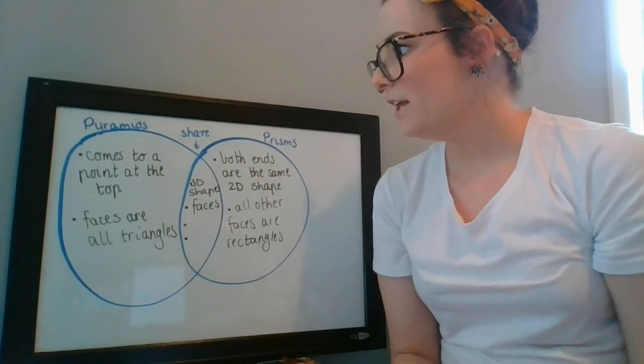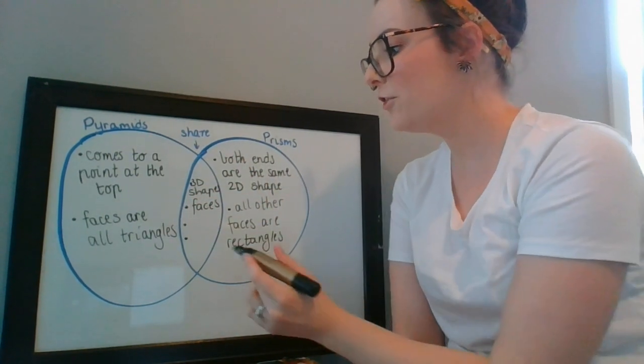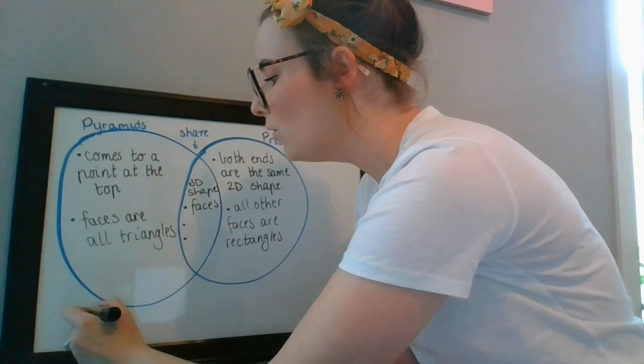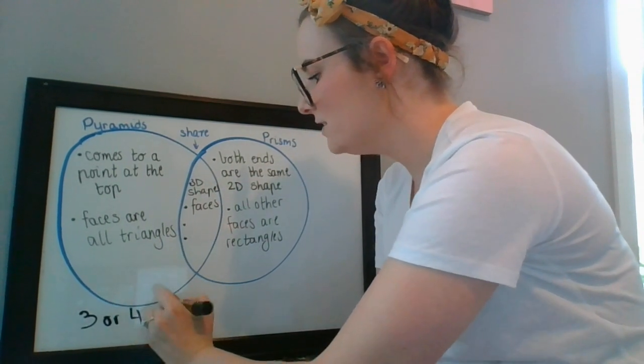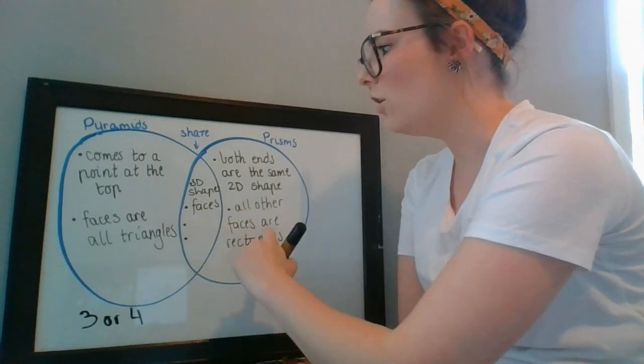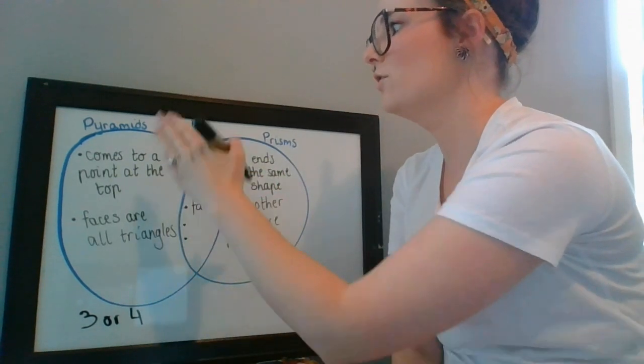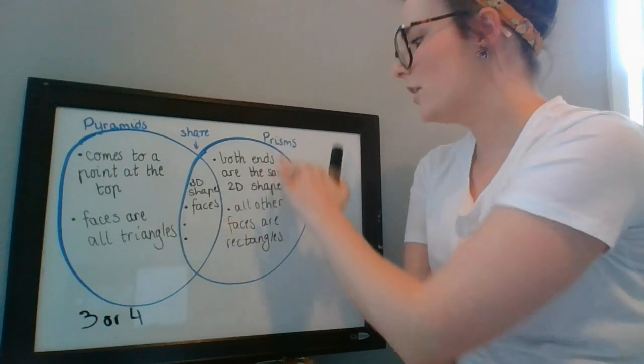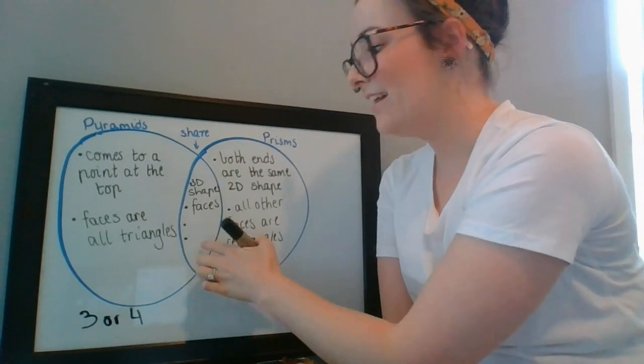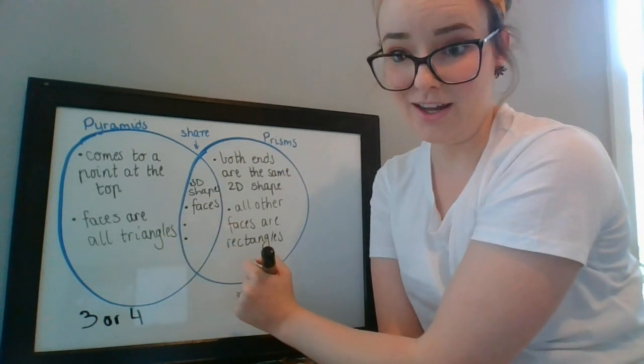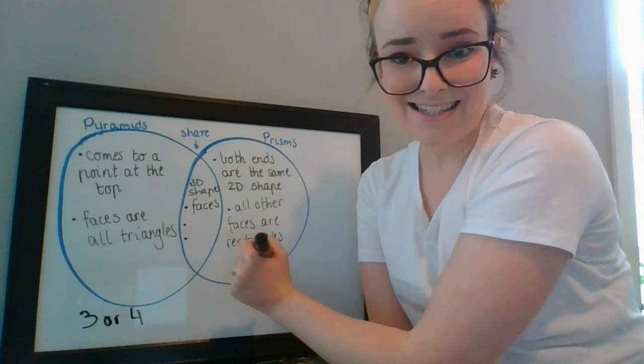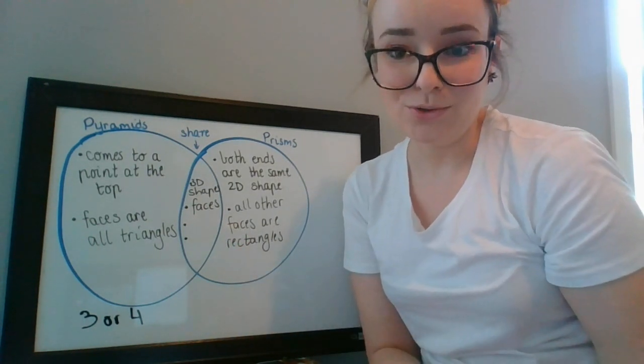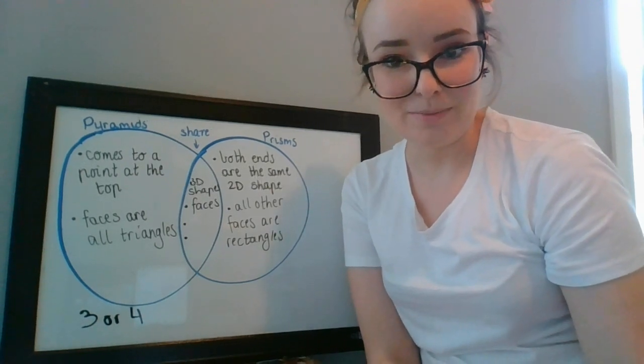You should be able to think of at least three or four different things for each of our spaces. So three or four things for pyramids, three or four things for prisms, and three or four things that they share all together. Hopefully that makes sense and I'm looking forward to seeing some really cool Venn diagrams on our dojo app a little bit later.